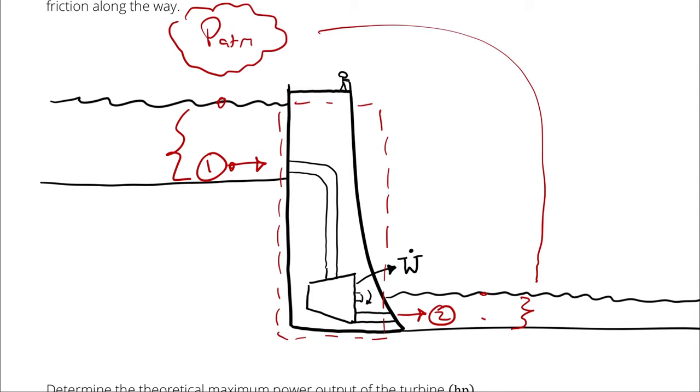So by accounting for our change in potential energy, we've already accounted for any changes that it makes along the way. Does that distinction make sense?